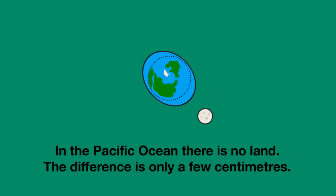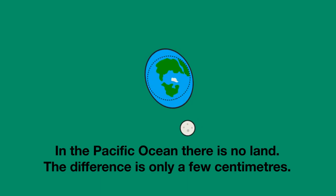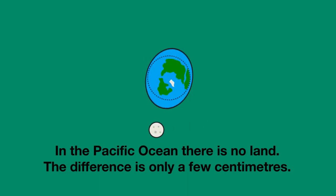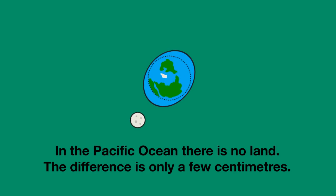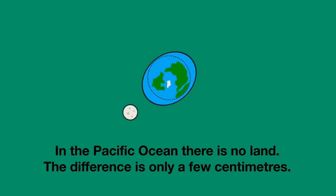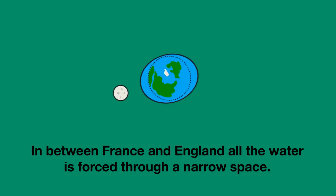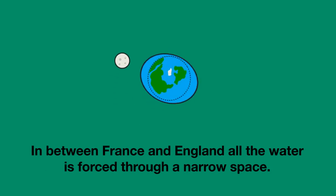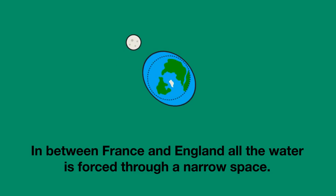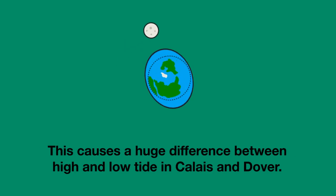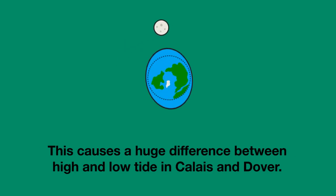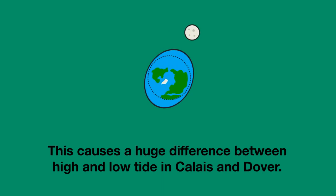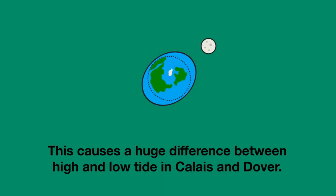For instance, in the Pacific Ocean there's no land, so the difference between a high and low tide is only a few centimeters. But in the small bit of sea between France and England, all the water coming from the open ocean is forced through a narrow space. This causes a huge difference between the high and low tide in Calais and Dover — around 15 meters or even more.